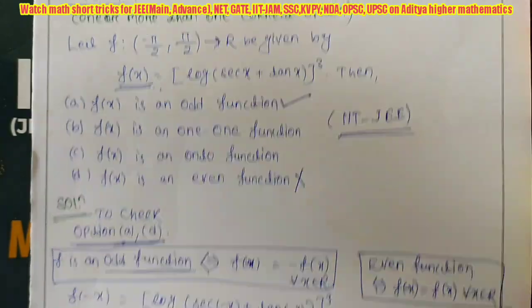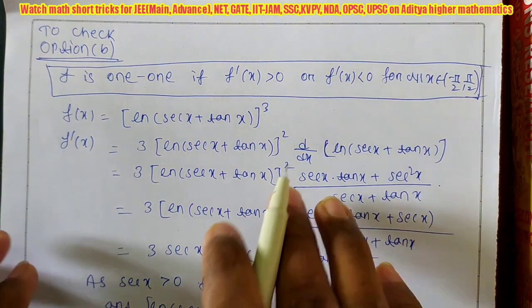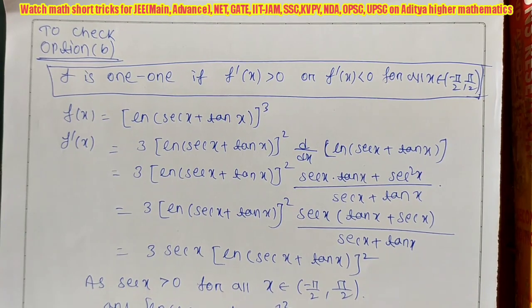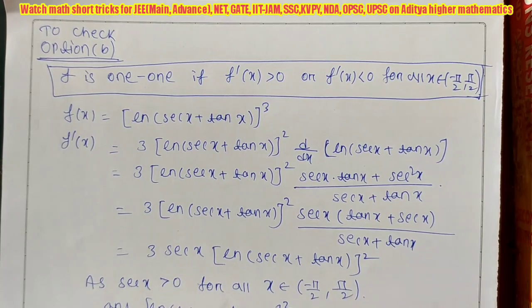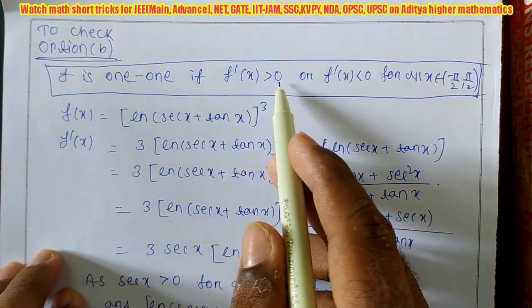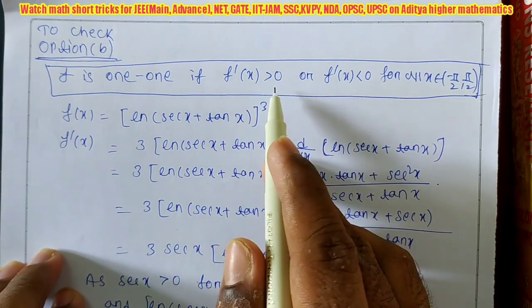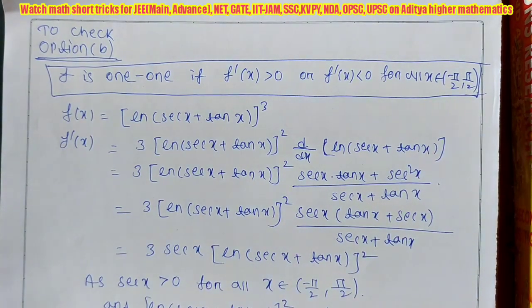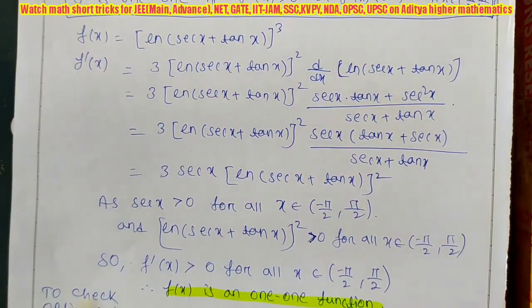So first we will check option B — whether f is one-to-one. From my previous videos I explained the shortcut: if f'(x) < 0 or f'(x) > 0 for all x in the domain, then the function is one-to-one. I will now apply that shortcut. We need to find f'(x) — the simple derivative.